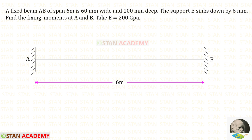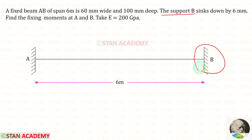Hello everyone. Today we are going to analyze this fixed beam. The span of the beam is given as 6 meters. In this beam there is no load. The support B sinks by 6 millimeters.